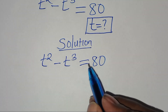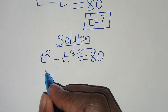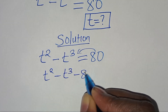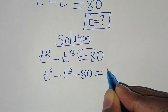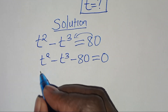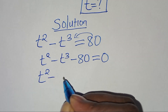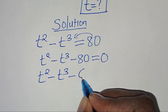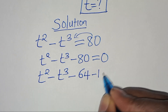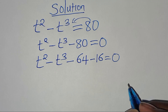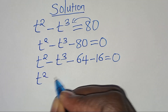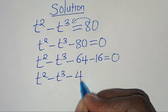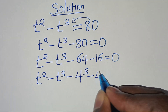The first step is to take 80 on the left hand side so that we have t squared minus t to the power of 3 minus 80 equals 0. Now we can express minus 80 as minus 64 minus 16, so we have t squared minus t to the power of 3 minus 64 minus 16 equals 0.